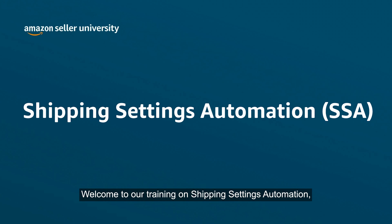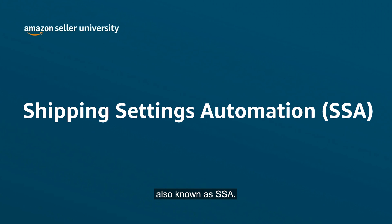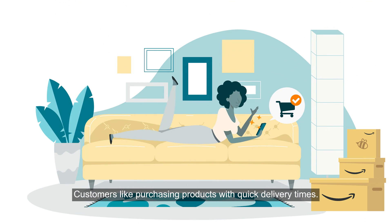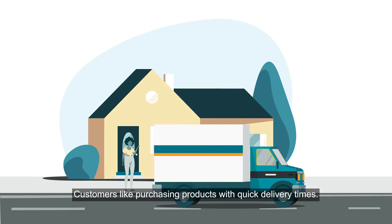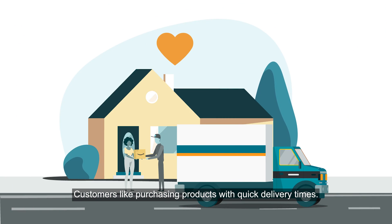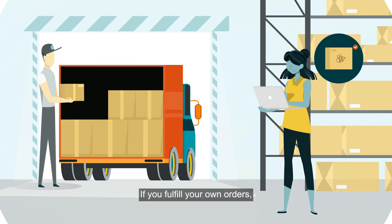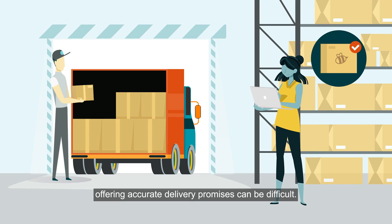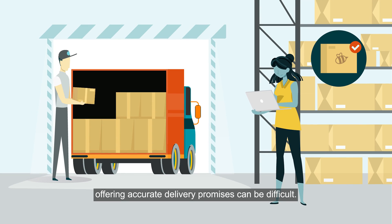Welcome to our training on Shipping Settings Automation, also known as SSA. Customers like purchasing products with quick delivery times. If you fulfill your own orders, offering accurate delivery promises can be difficult.